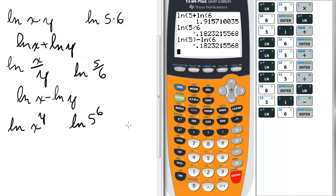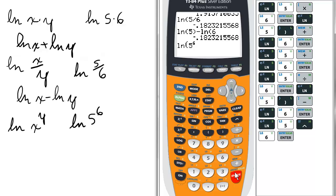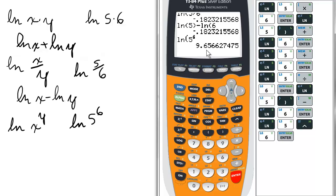Last law of natural logs, ln of x to the y. Well, we're going to plug in our calculator. ln of 5 raised to the 6. And we get this number, 9.65.